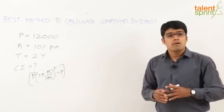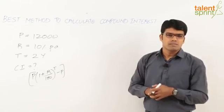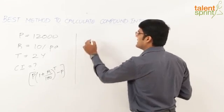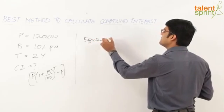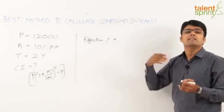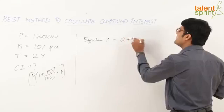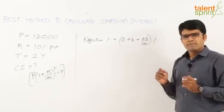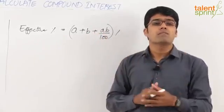So let us look at an alternate method which serves as the best way of doing compound interest calculations. We are going to use the concept of effective percentage, which is a very important application useful for solving not just compound interest questions but many other aptitude questions. Effective percentage is given as a + b + ab/100, where a and b are two different percentages.